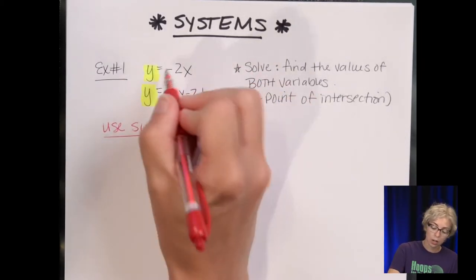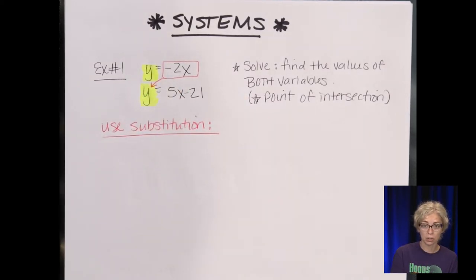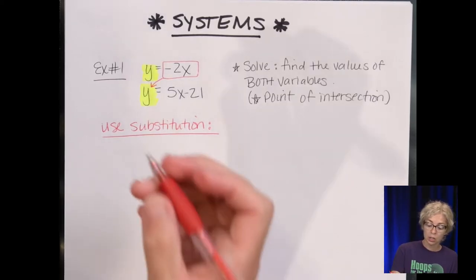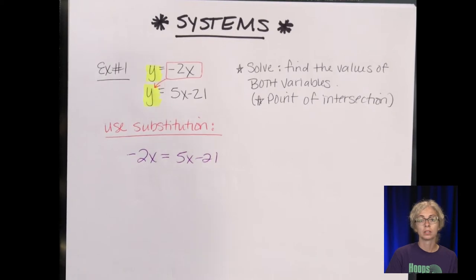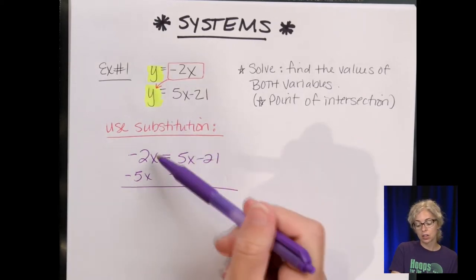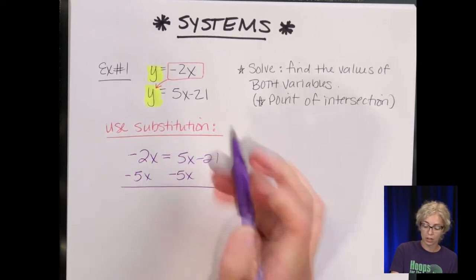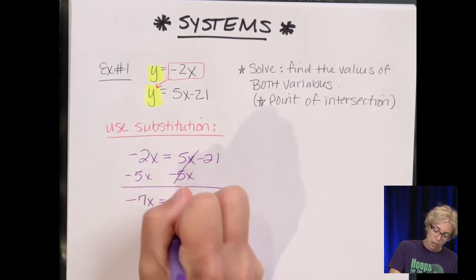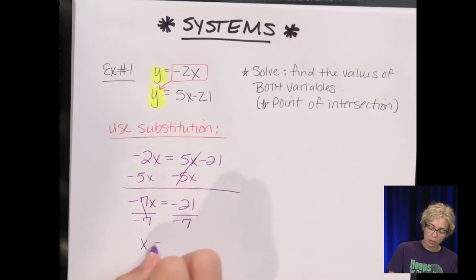I'm going to take one of the expressions equivalent to y and substitute it into the other equation where y appears. Because they are equivalent — they represent the same thing. So I end up with negative 2x equals 5x minus 21. Now we have an equation with just x. I'm going to subtract 5x over, giving negative 7x equals negative 21. Divide by negative 7, and x equals positive 3.